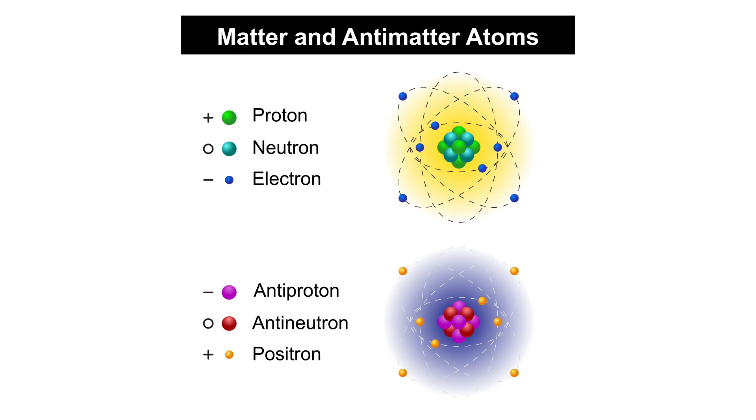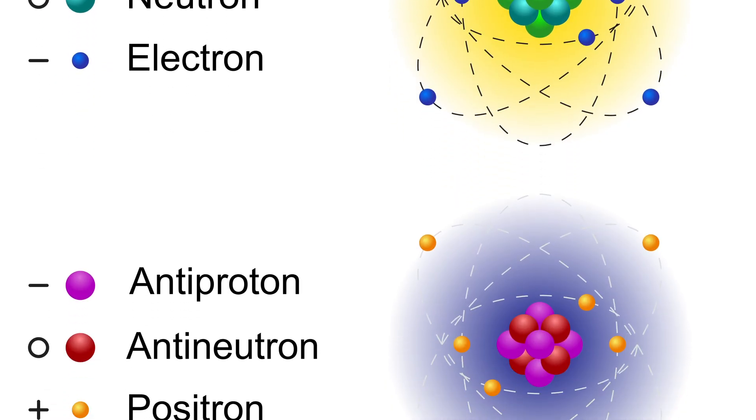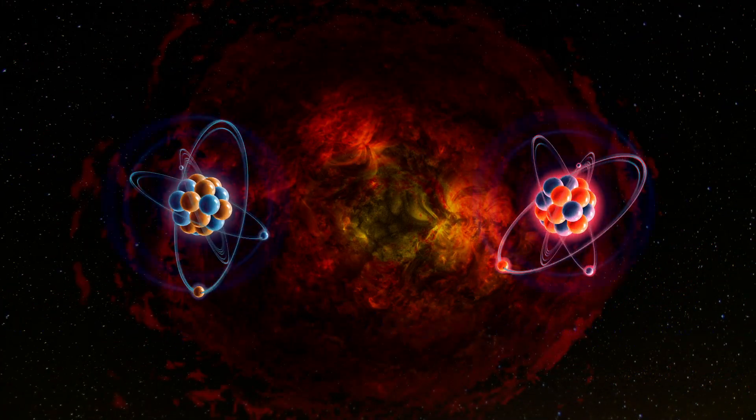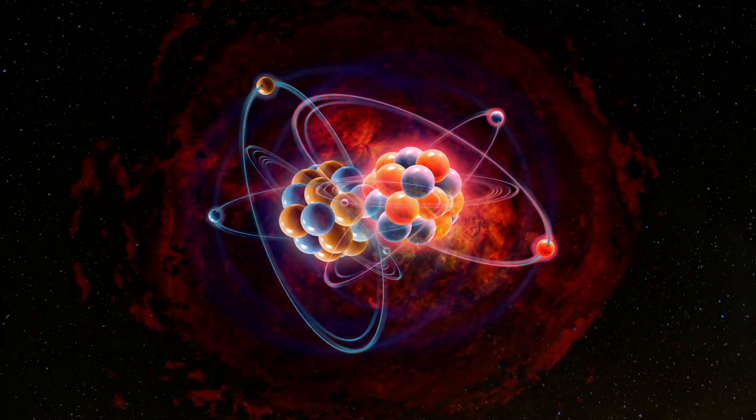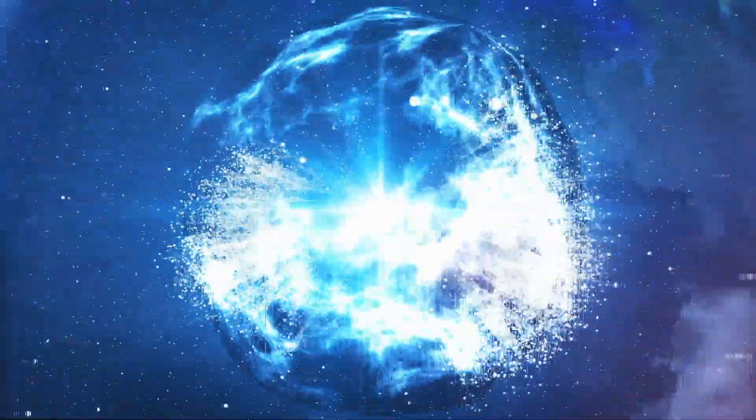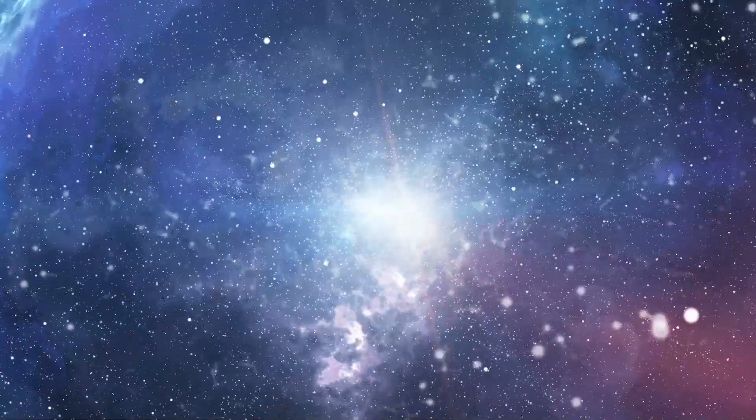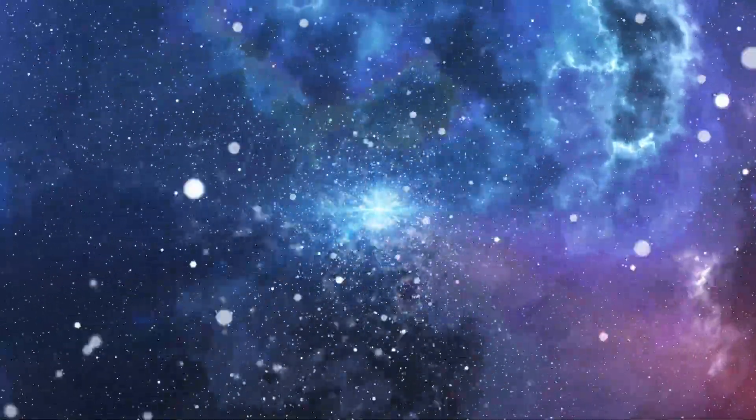In modern physics, antimatter is made up of elementary particles each of which has the same mass as their corresponding matter counterparts - protons, neutrons, and electrons - but the opposite charges and magnetic properties. A collision between any particle and its antiparticle partner leads to their mutual annihilation, giving rise to various proportions of intense photons, gamma rays, and neutrons.